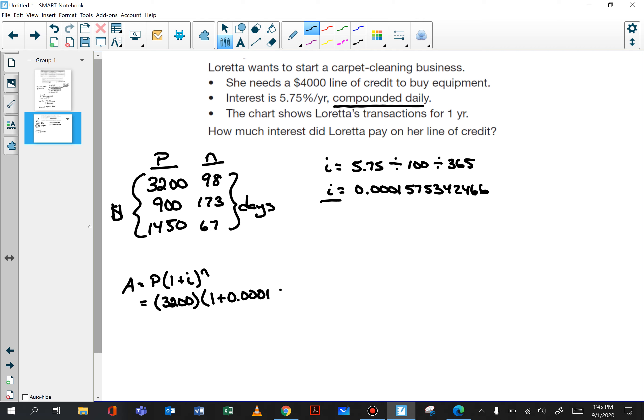And N is going to be the number of days for each of these transactions. So in the first case the principal will be 3,200, N will be 98, and I will be that ugly decimal. Substituting our values into the formula, 1.015556908. And now we can multiply by 3,200.